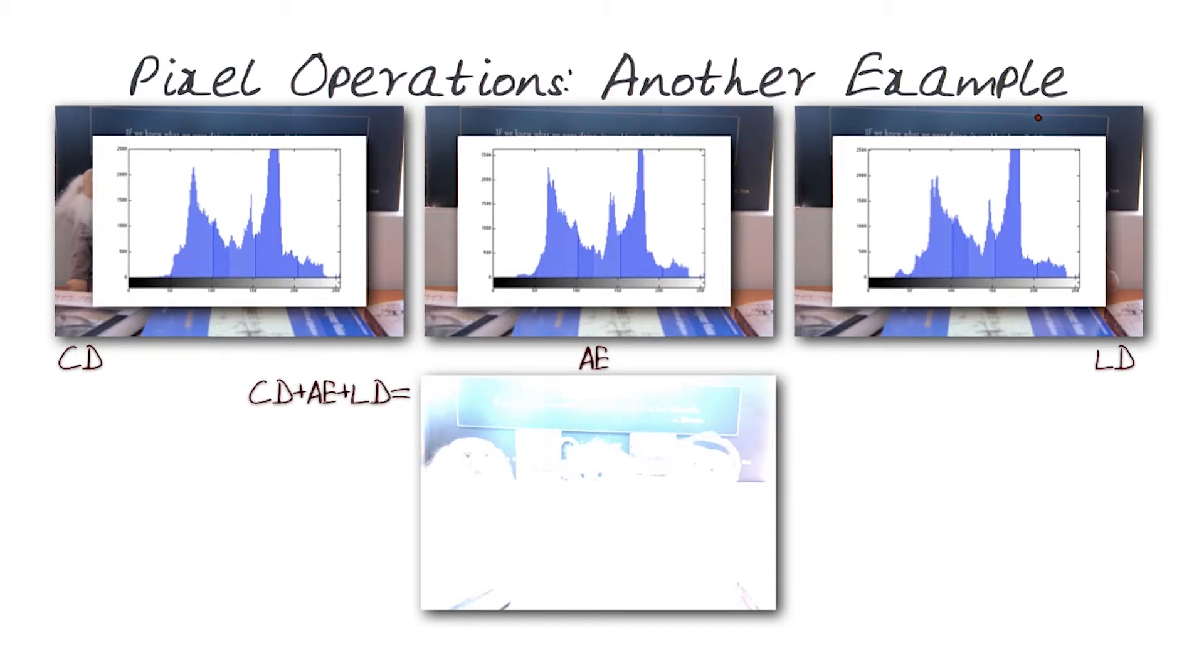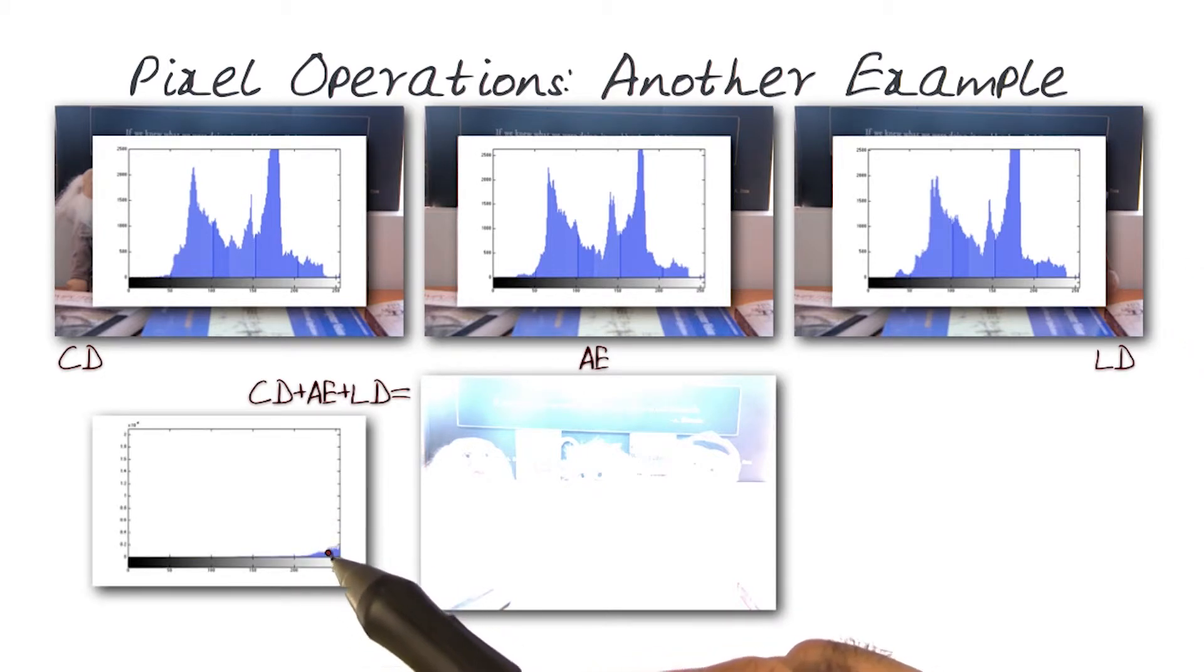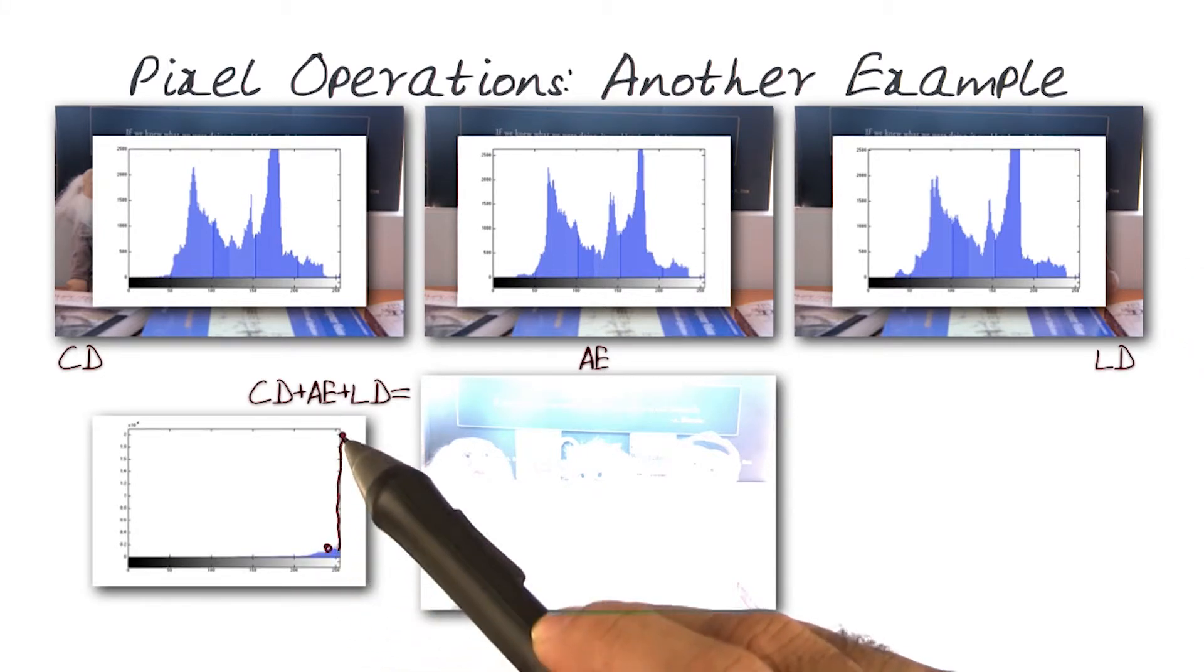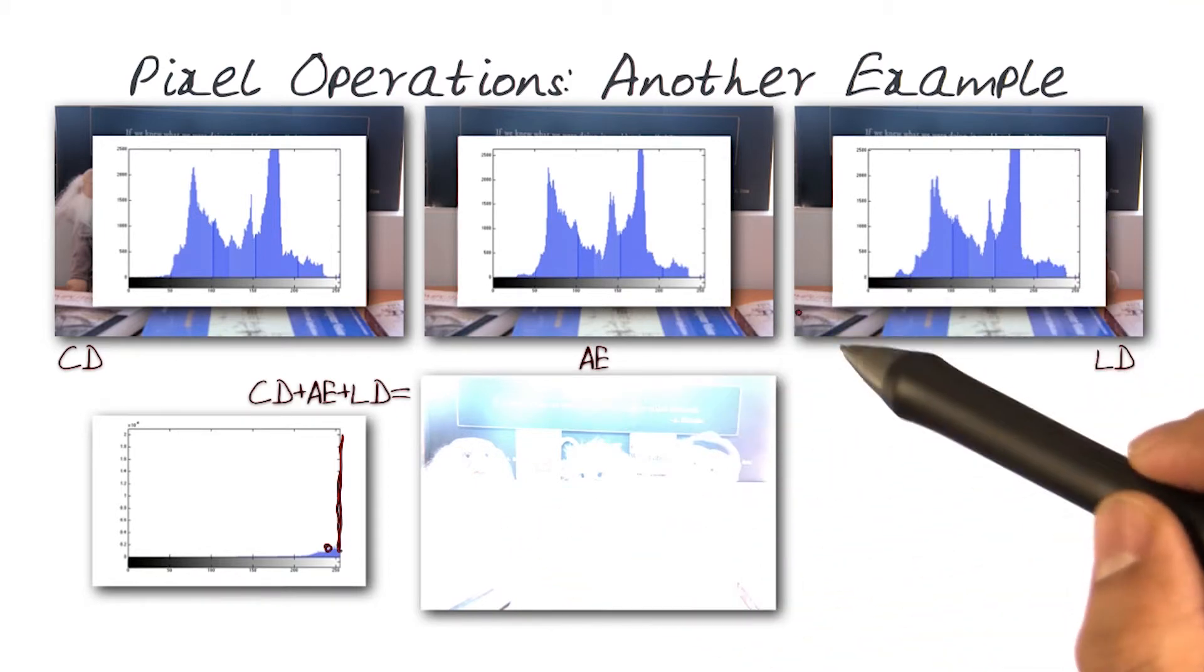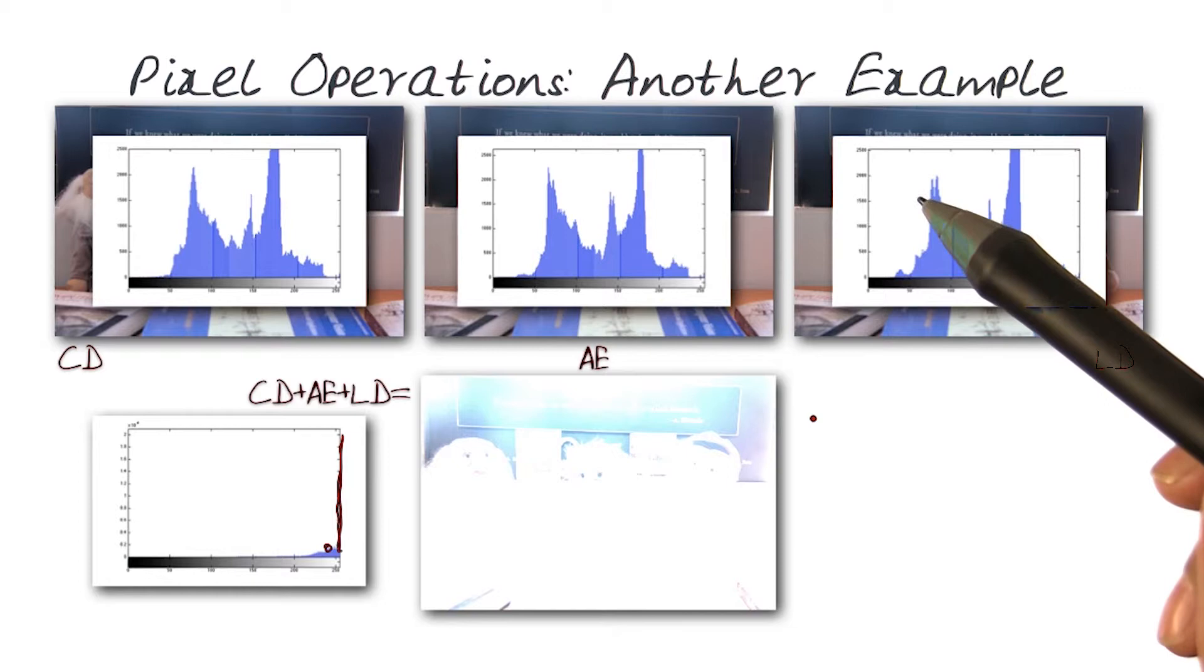But what happens when you look at this? If you notice, a lot of the values are here, but the peak is right here. And majority, by a long shot, of the pixels are white. That basically tells us, yes, that this addition would have required us to do some sort of scaling.